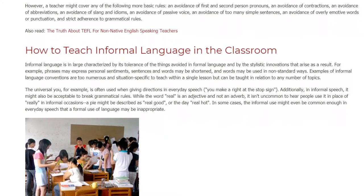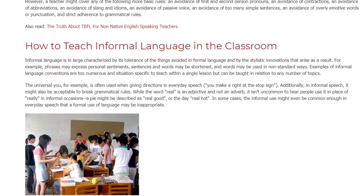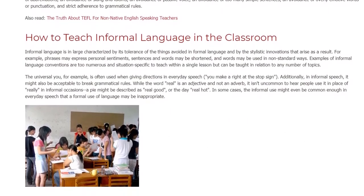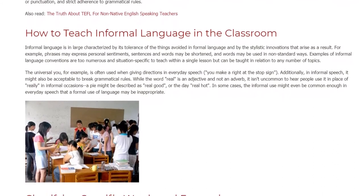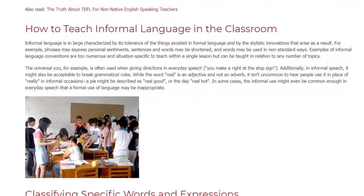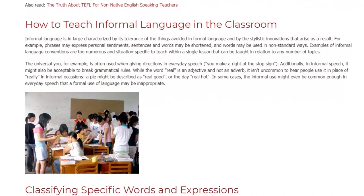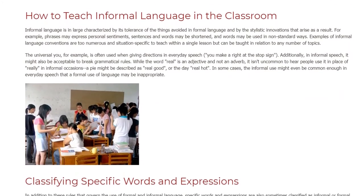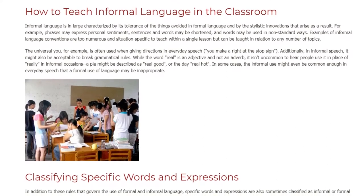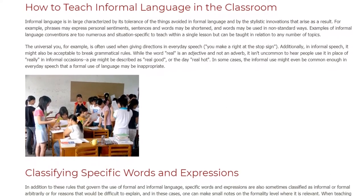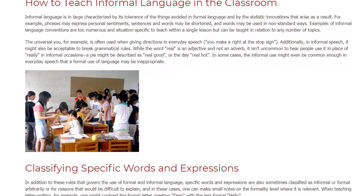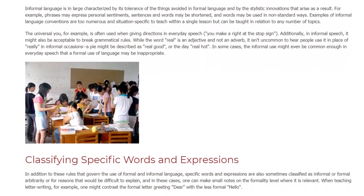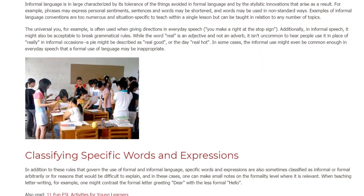For example, 'you make a right at the stop sign.' Additionally, in informal speech, it might also be acceptable to break grammatical rules. While the word 'real' is an adjective and not an adverb, it isn't uncommon to hear people use it in place of 'really' in informal occasions — a pie might be described as 'real good,' or the day 'real hot.' In some cases, the informal use might even be common enough in everyday speech that a formal use of language may be inappropriate.